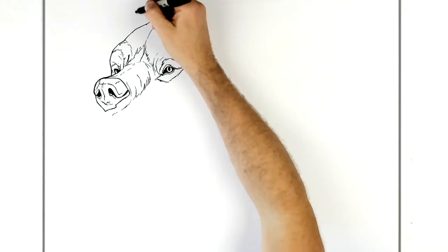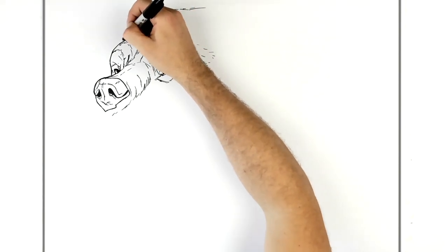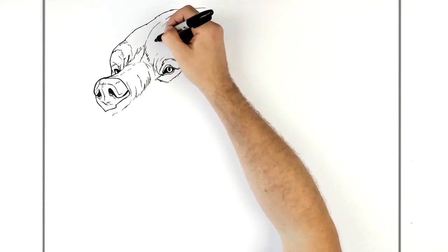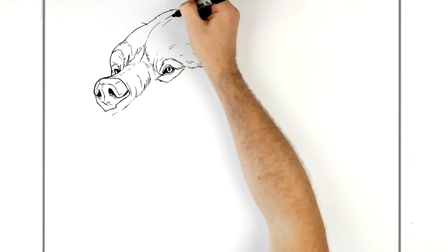Again some texture, hairy lines and stuff like that. All right, and can we see an ear? I think we can see like a little bit of an ear just over here.